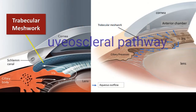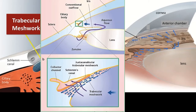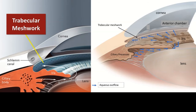The conventional pathway — the trabecular meshwork — has three important layers: the juxtacanalicular layer, which gives the largest resistance; followed by the corneoscleral layer; and finally the uveal part. From there, aqueous filters into Schlemm's canal, and small collector channels take the aqueous to the episcleral veins.